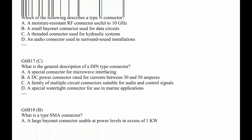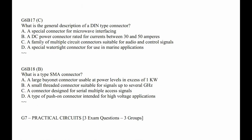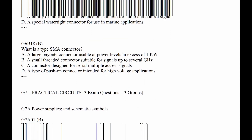G6B17. What is the general description of a DIN type connector? It's circular with a series of pins — a family of multiple circuit connectors suitable for audio and control signals, often seen on the back of transceivers. G6B18. What is a type SMA connector? It's what you see on a lot of little RF devices — a small threaded connector suitable up to several gigahertz. For example, SDR receivers often have an SMA connector.